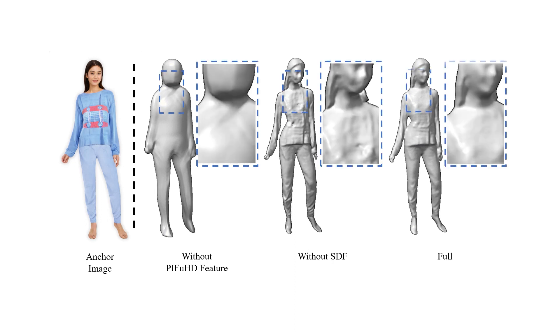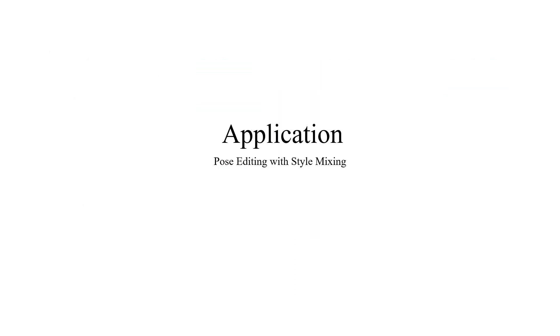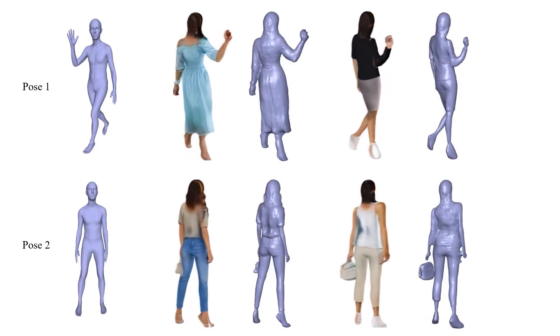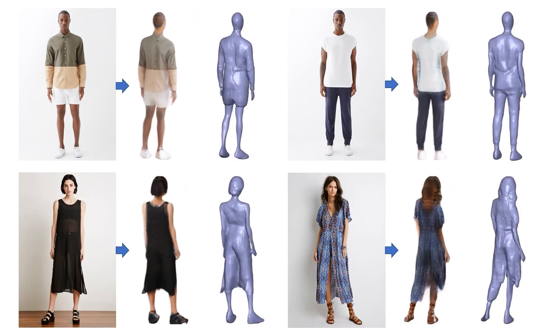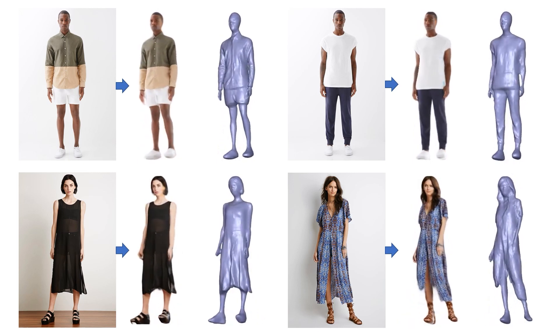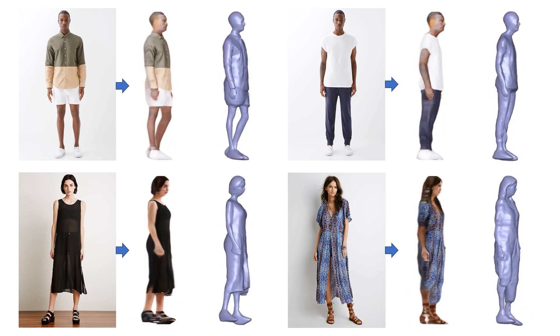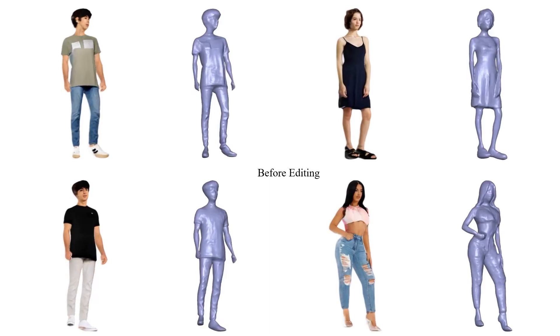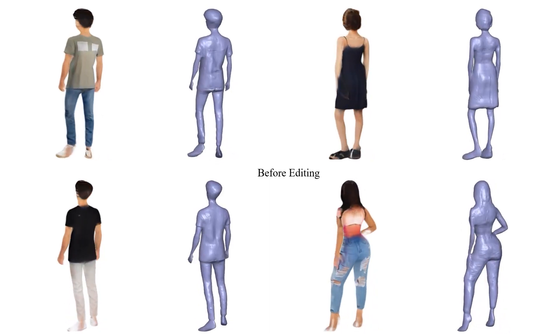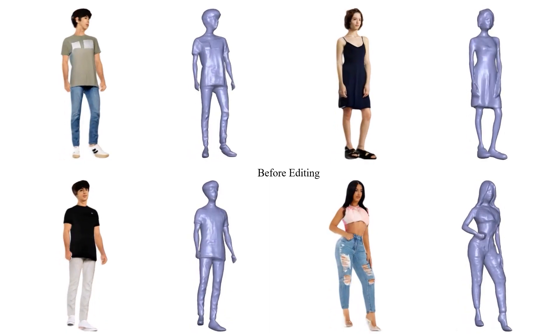With geometry adaptation using reconstruction priors, our full method achieves better geometry convergence. In our applications, style mixing on 2D can achieve 3D results with given poses, and real images can be inverted to latent space to generate 3D results. By editing in the latent space, changes to the length of upper or lower clothing can be seamlessly upgraded to 3D.